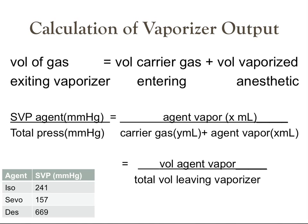The main thing to get from this section is the equation for the calculation of vaporizer output. The volume of gas exiting the vaporizer equals the volume of the carrier gas entering plus the volume of the vaporized anesthetic. So the saturated vapor pressure of the agent divided by the total pressure equals the agent vapor over the carrier gas plus the agent vapor — that is, the volume of agent vapor divided by the total volume leaving the vaporizer.